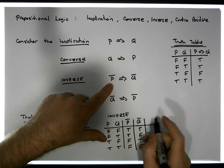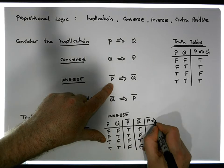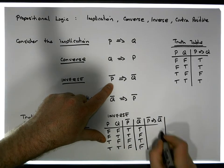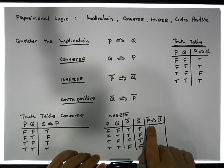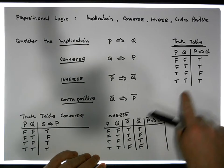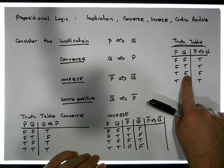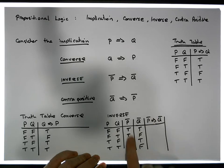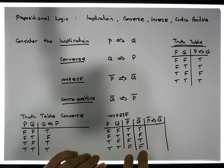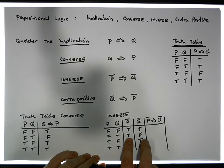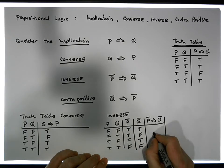Now let's build the implication: P-bar implies Q-bar. The implication by definition is only ever false when the premise is true and the conclusion is false. The premise is the P-bar column and the conclusion is the Q-bar column, so we're looking for a true-false. The only place we have a true-false is here, so we get a false there.